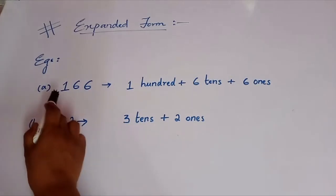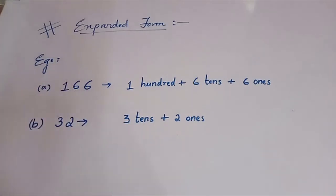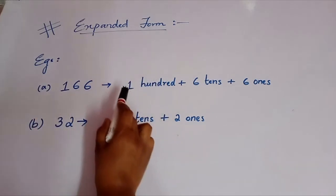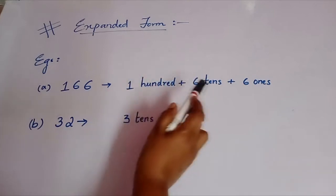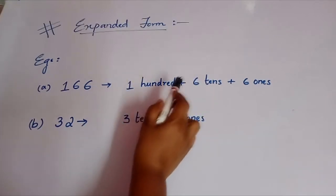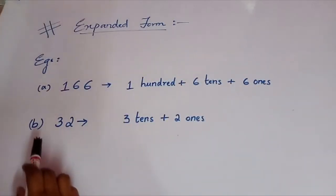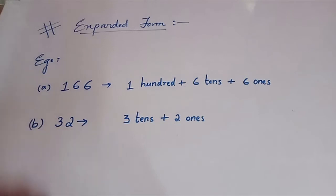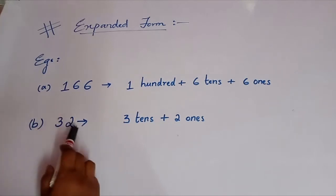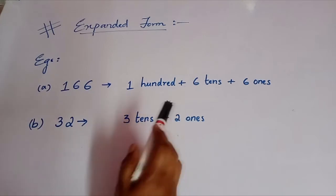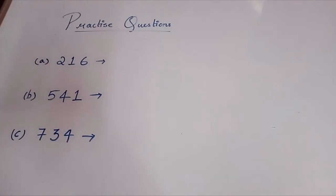Let me give you some more examples. First: 166 — how many hundreds are there? 100. Remember, we will write 100, not 100s. So: 100 plus 6 tens plus 6 ones. Now the second one: 32. Since this is a 2-digit number, the place value of 3 is tens. So: 3 tens plus 2 ones. I hope the expanded form is clear to you all.